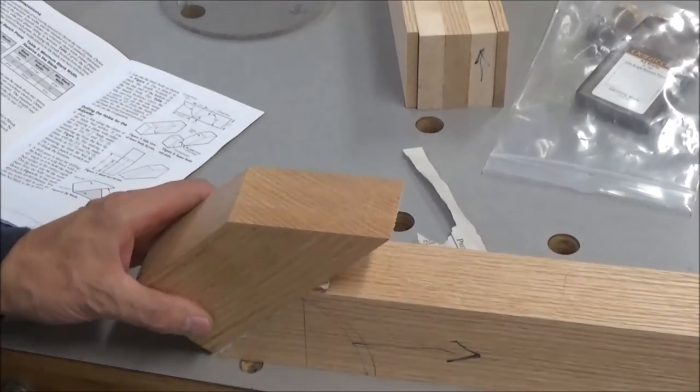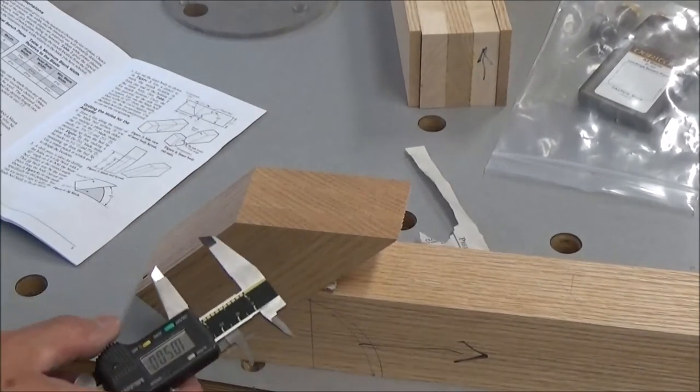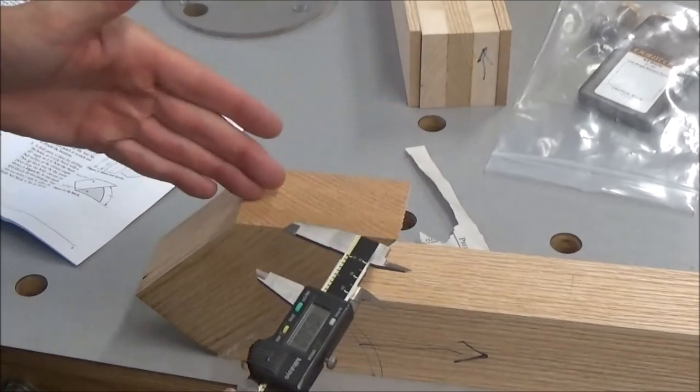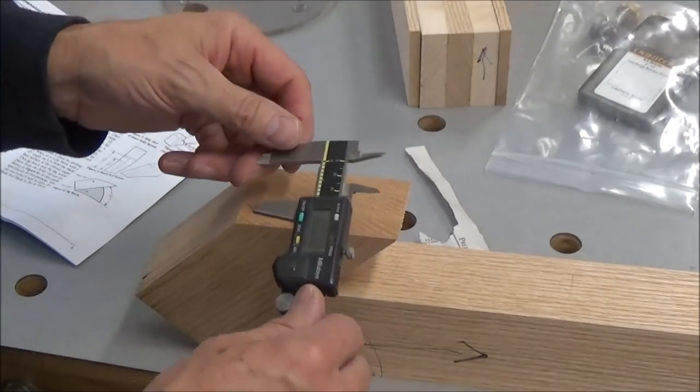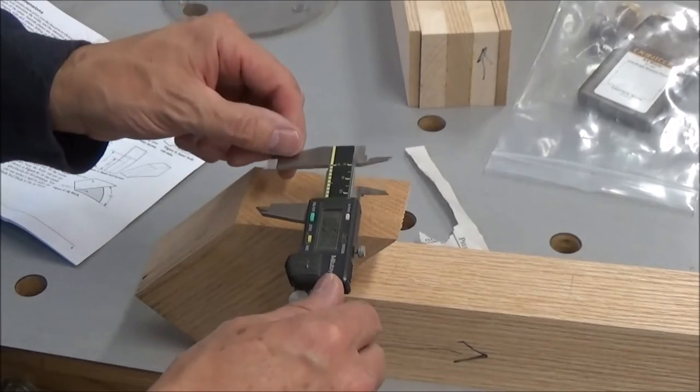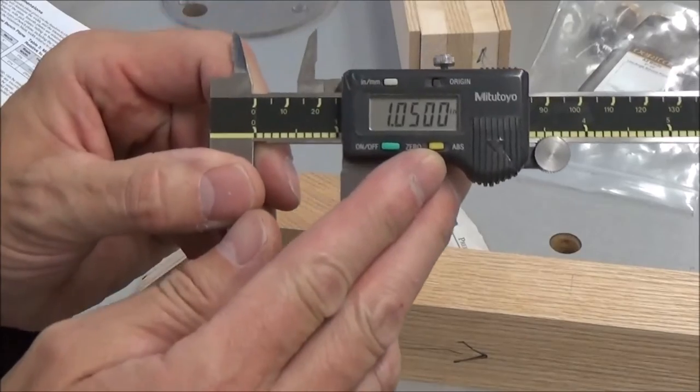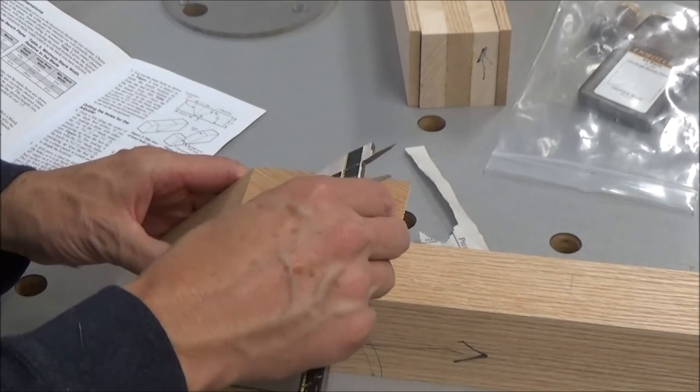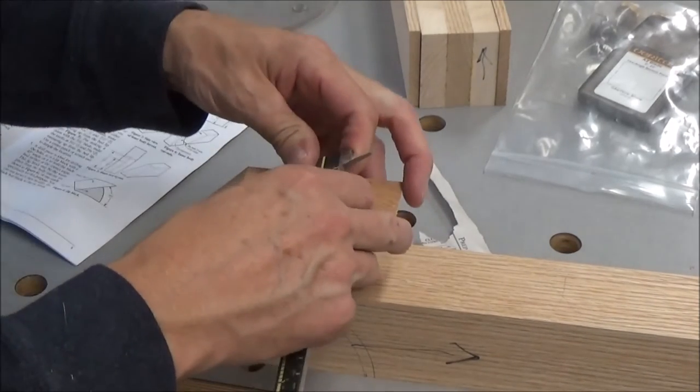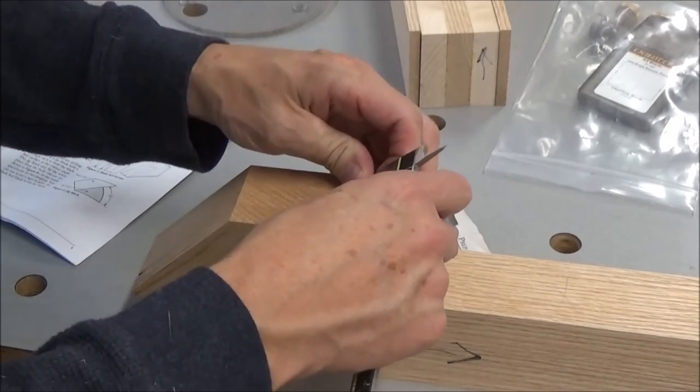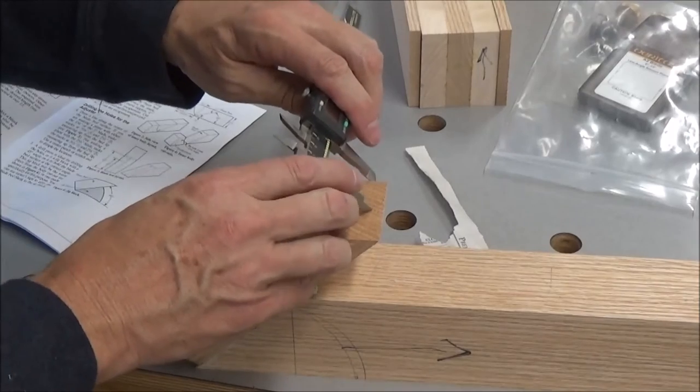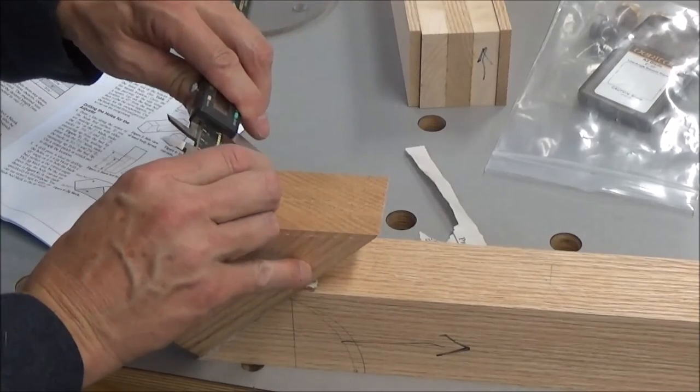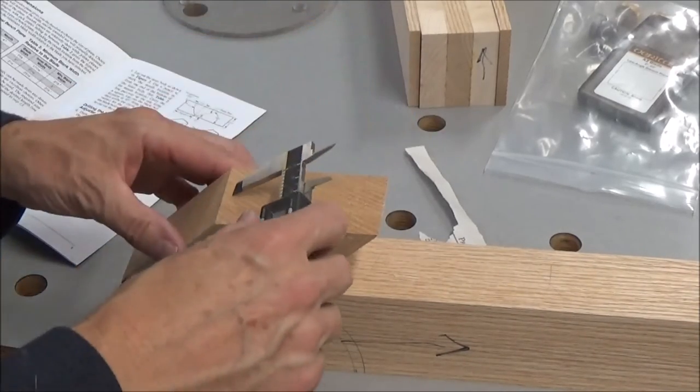Okay, I'll remove the excess paper here. My block measures 2.1 inches. They said it's supposed to be about two and a sixteenth, so I'm maybe a little fat. But anyway, to mark my center line, I'm just going to take my digital caliper here, set it to one point zero five, and scribe it right down the middle.